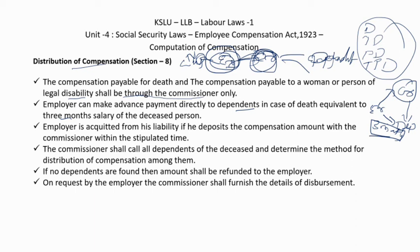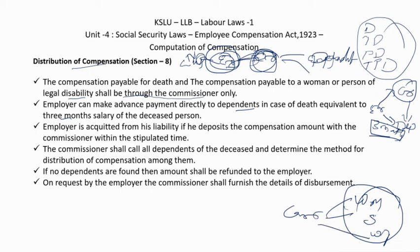The commissioner shall call all dependents of the deceased — such as a widowed mother, son, wife — and determine the method of distribution. If no dependents are found, the amount shall be refunded to the employer. On the employer's request, the commissioner shall furnish full details of disbursement, including to whom and how much was paid.